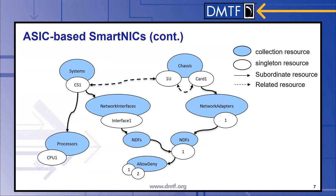Showing an ASIC-based SmartNIC from a resource model perspective, we're building on the previous slide showing the network adapter model. On the right side, we have chassis 1U and card 1 with network adapter 1 and network device function 1 — the port collection was removed for simplicity. On the left, we have our systems collection with a system called CS1, which is contained within chassis 1U. We can see its subordinate resources such as processors and network interfaces. Following the network interface model down into the network device function collection, you see that it maps over to the network device function under card 1, consistent with the advanced communication device model.